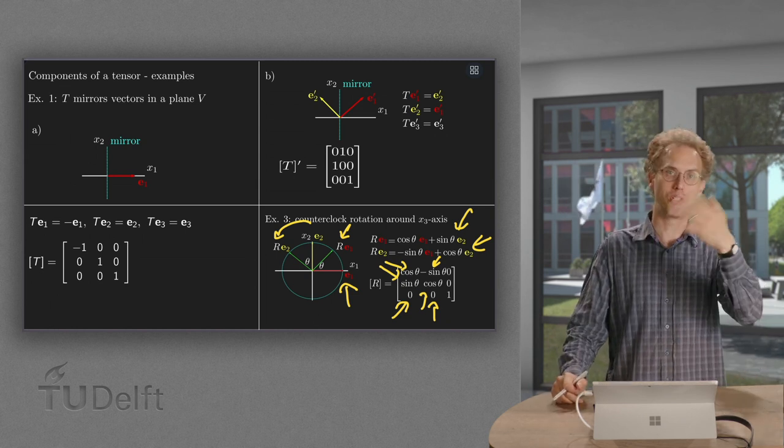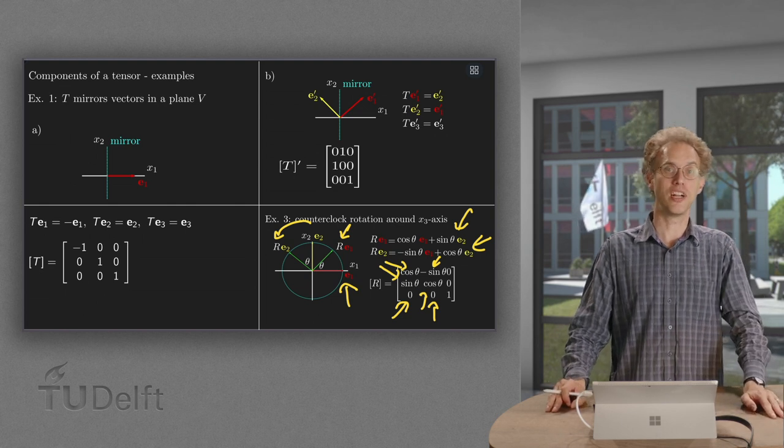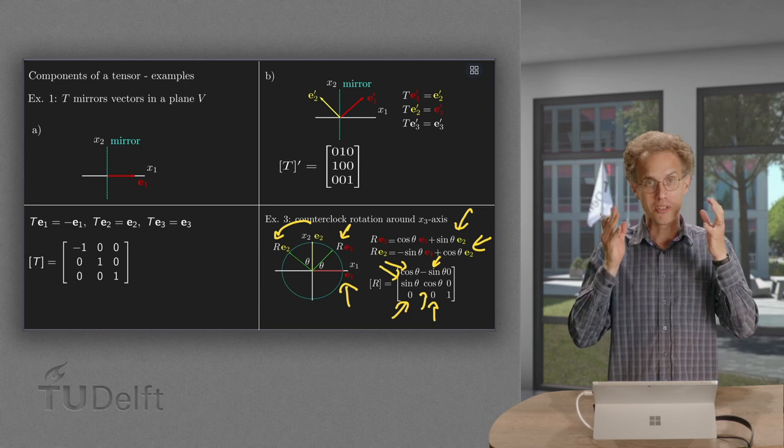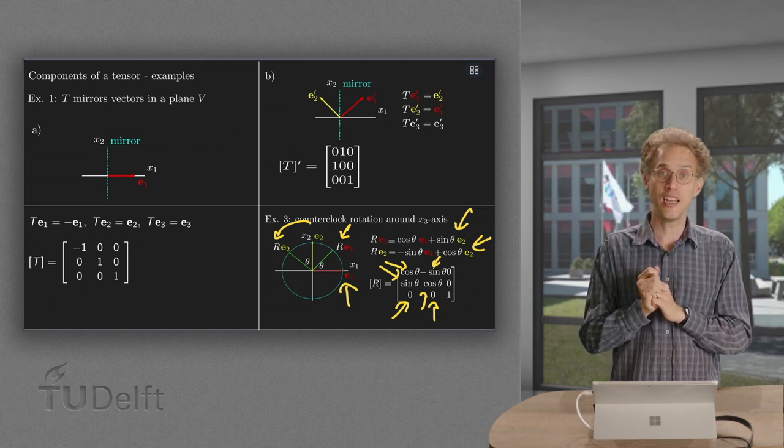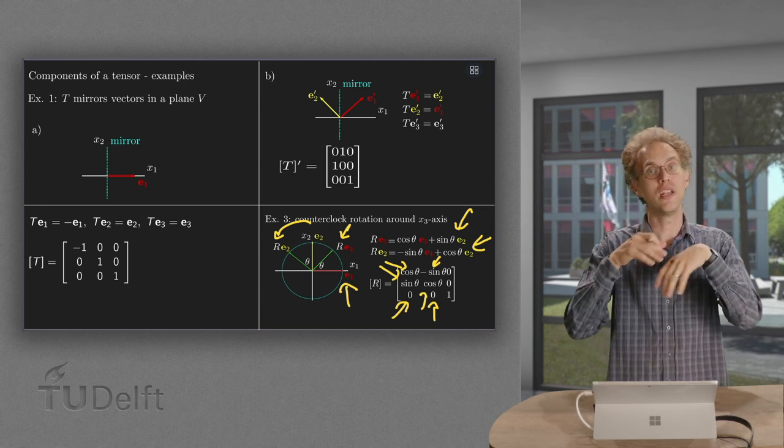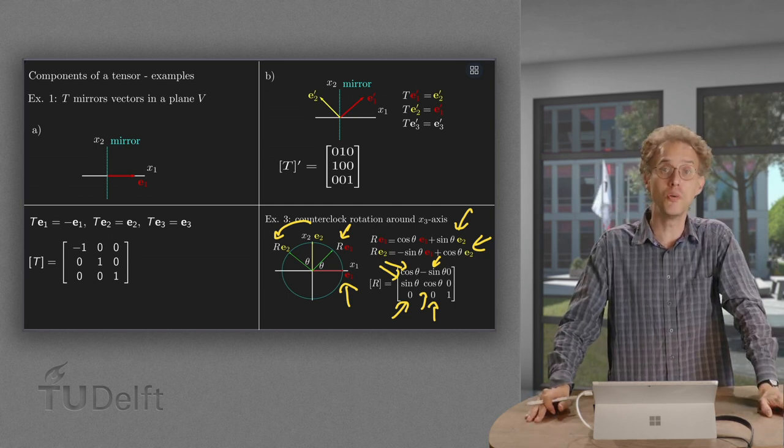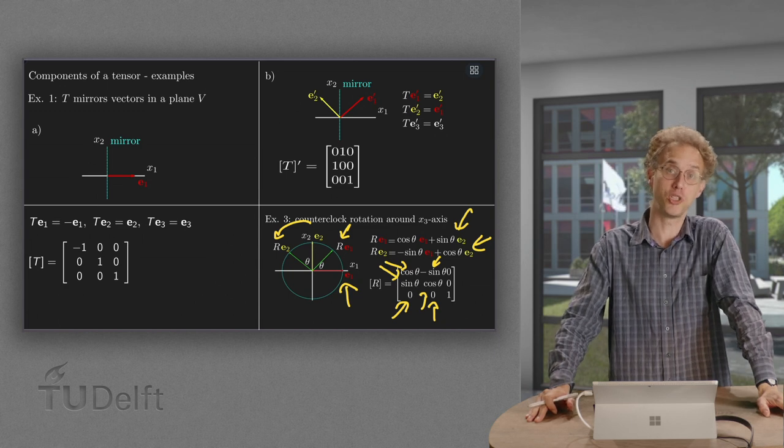Of course you could use again another basis here as well, and then your matrix changes a bit. However, your tensor is independent of your basis. Only the representation, the matrix representation, those numbers, do depend on which basis you have chosen.